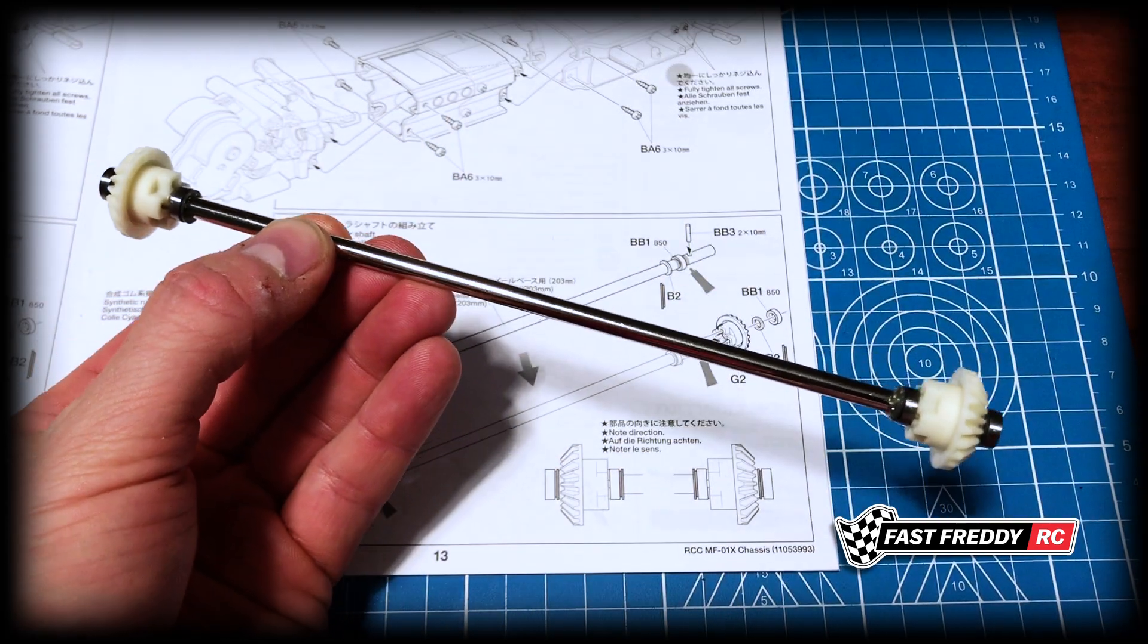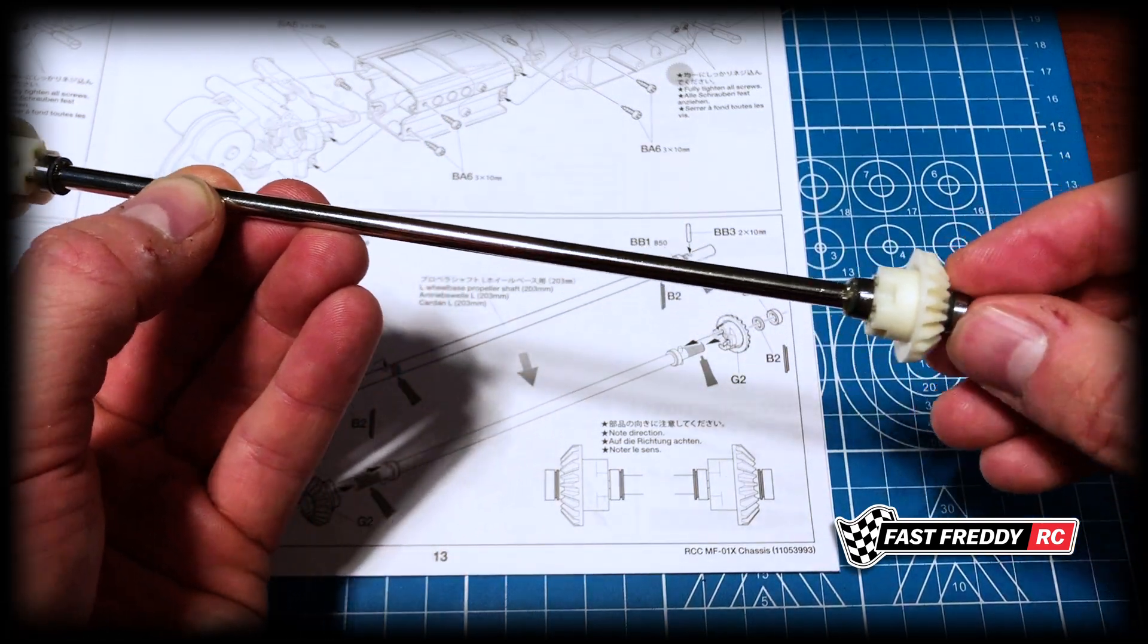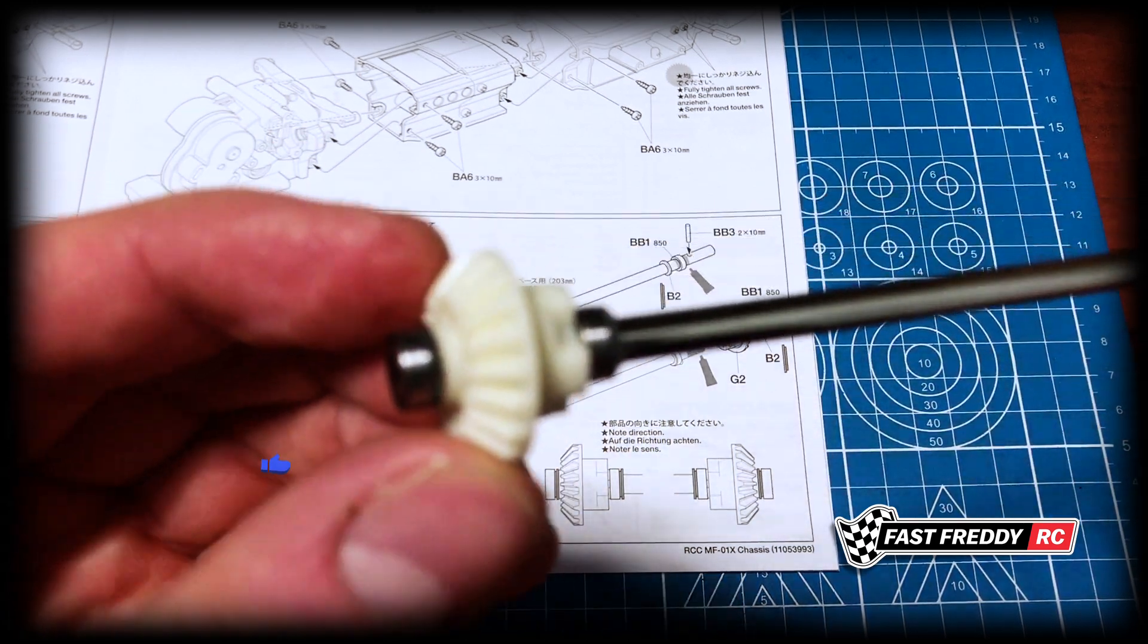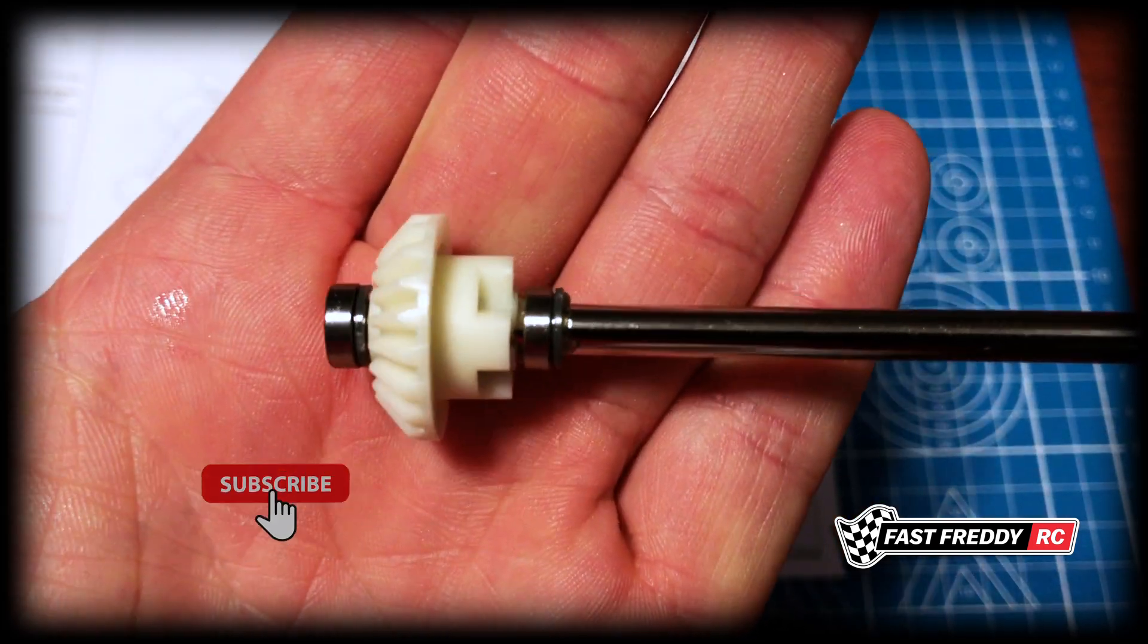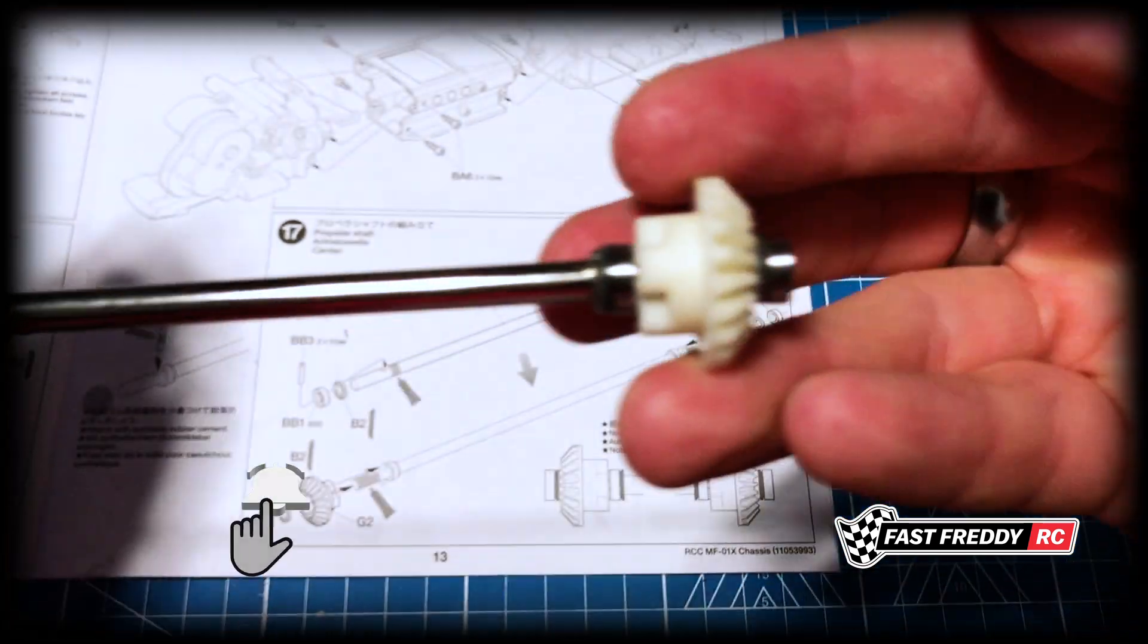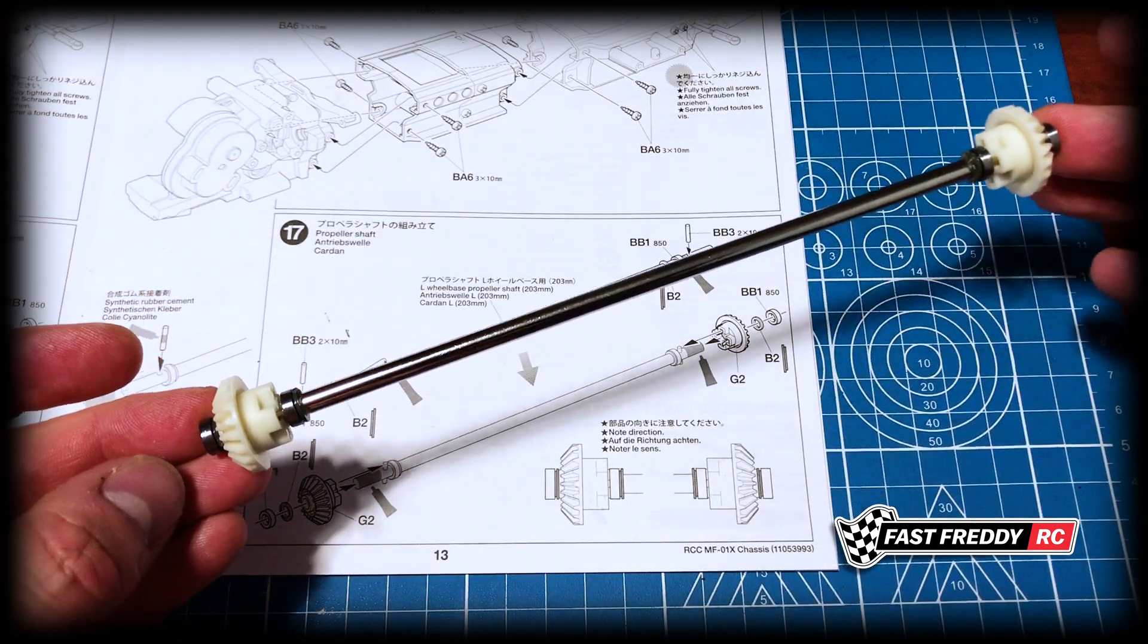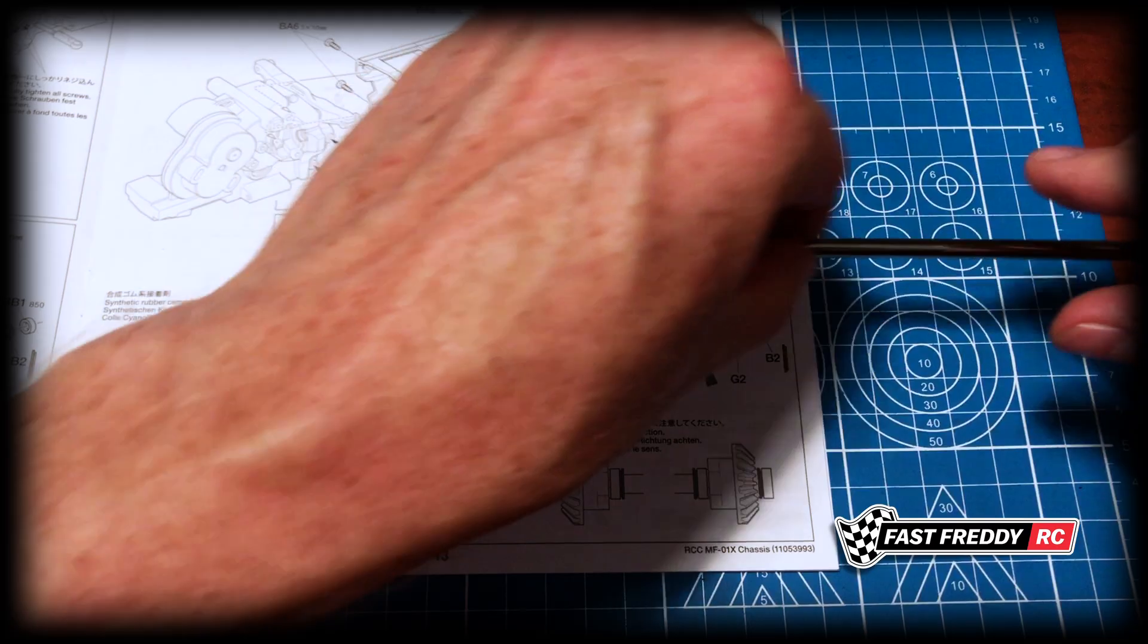So ultimately, there is our propeller shaft with both sides complete. And it should look like that on both sides. So there we go. There is our propeller shaft. So step 17 is done.